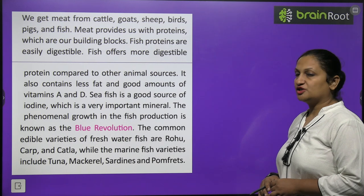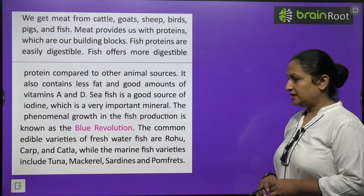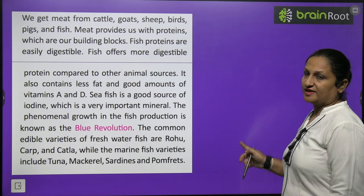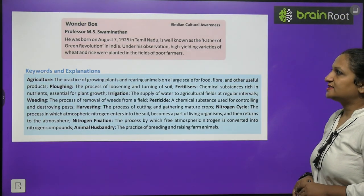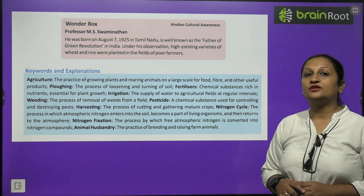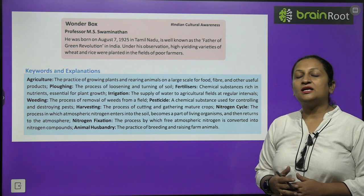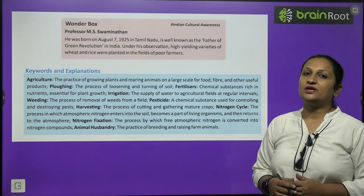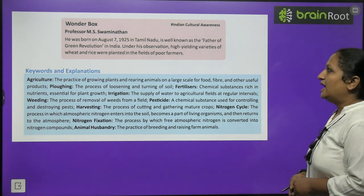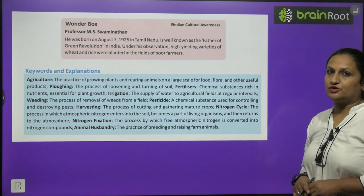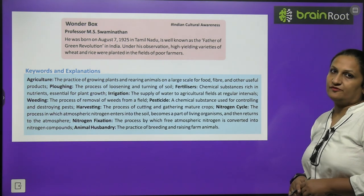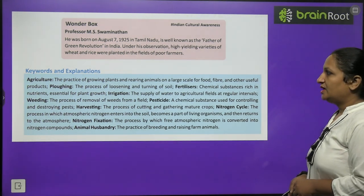Common edible freshwater fish varieties include rohu, katla and katla, while marine fish varieties include tuna, mackerel, sardines and pomfret. Professor M.S. Swaminathan is known as the father of the green revolution in India, born on August 7, 1925 in Tamil Nadu. Under his observation, high-yielding varieties of wheat and rice were planted in the fields of poor farmers.